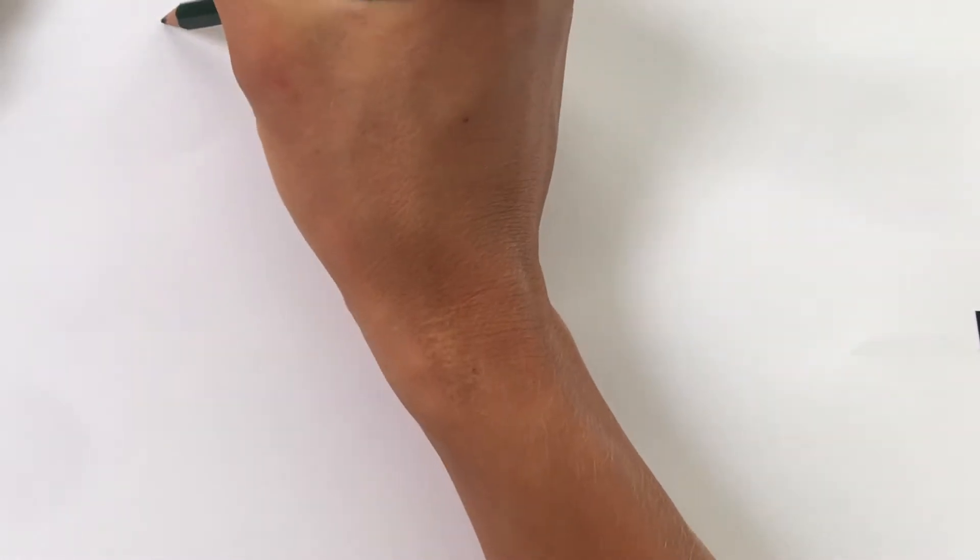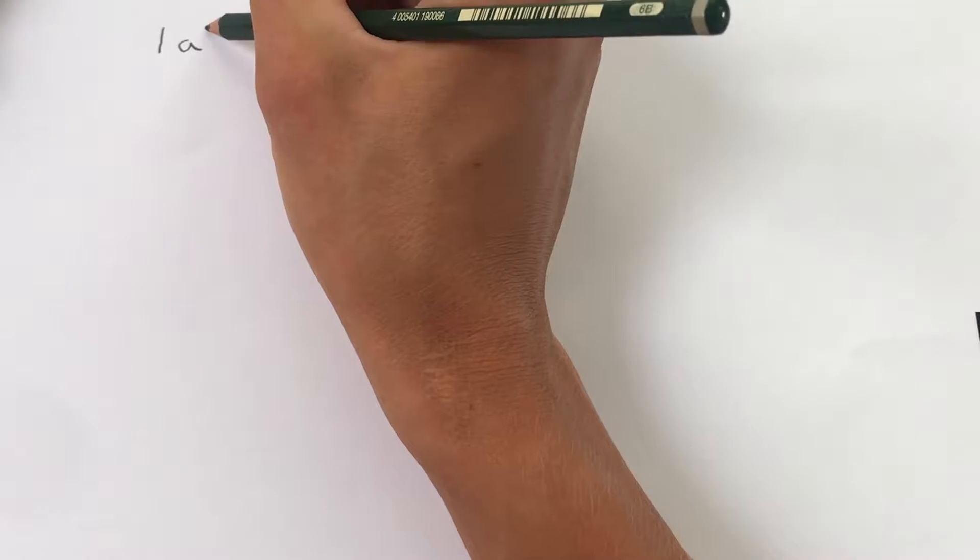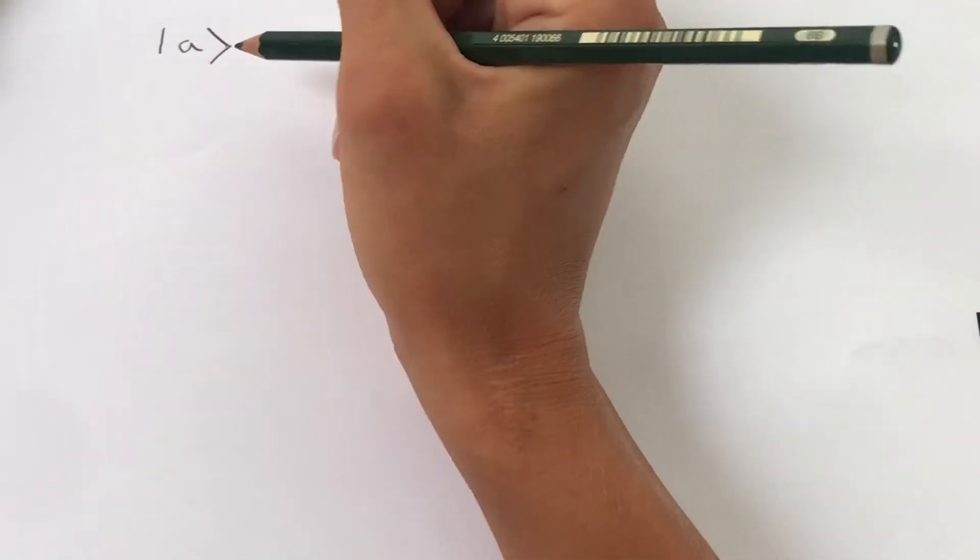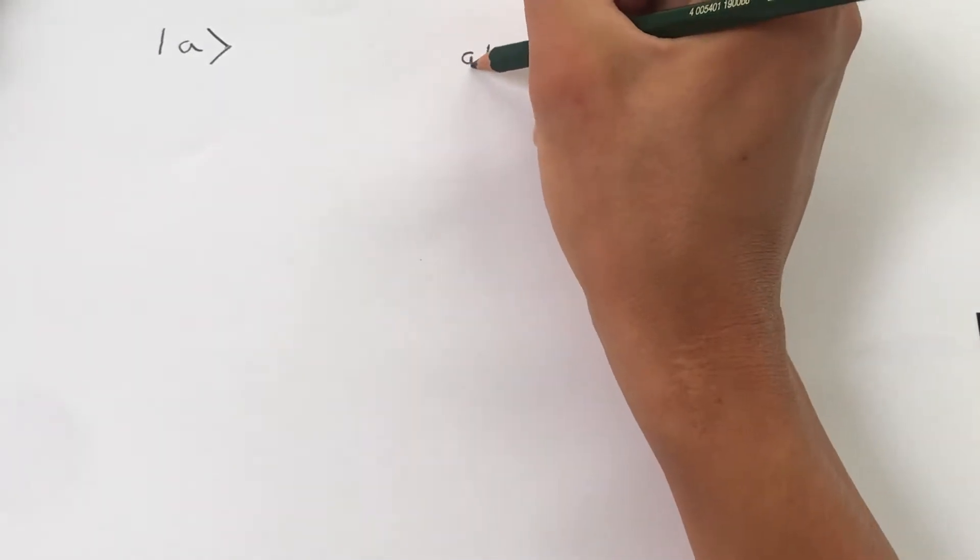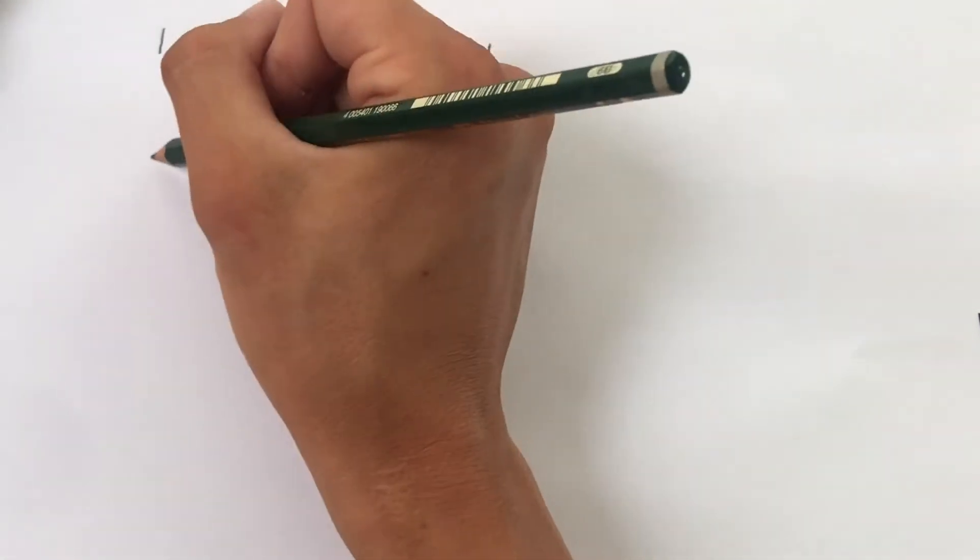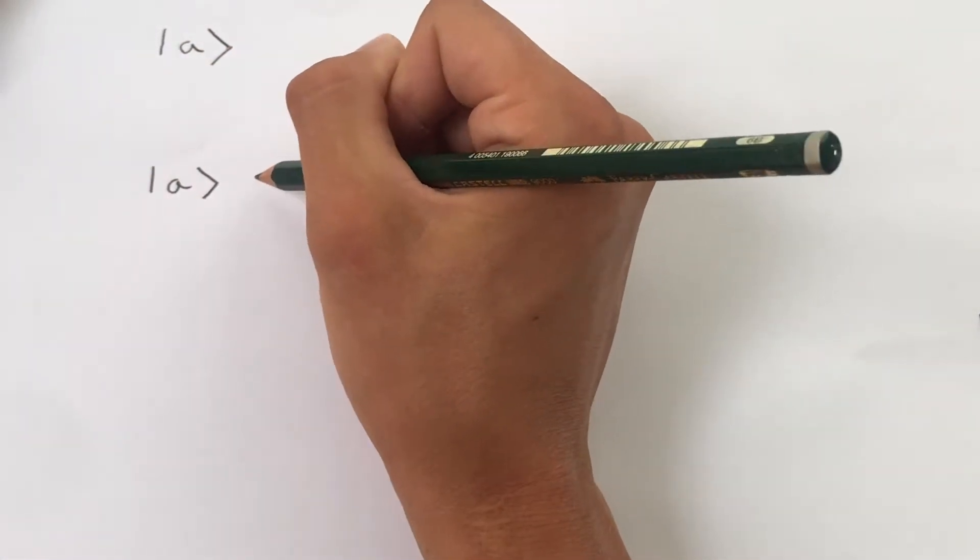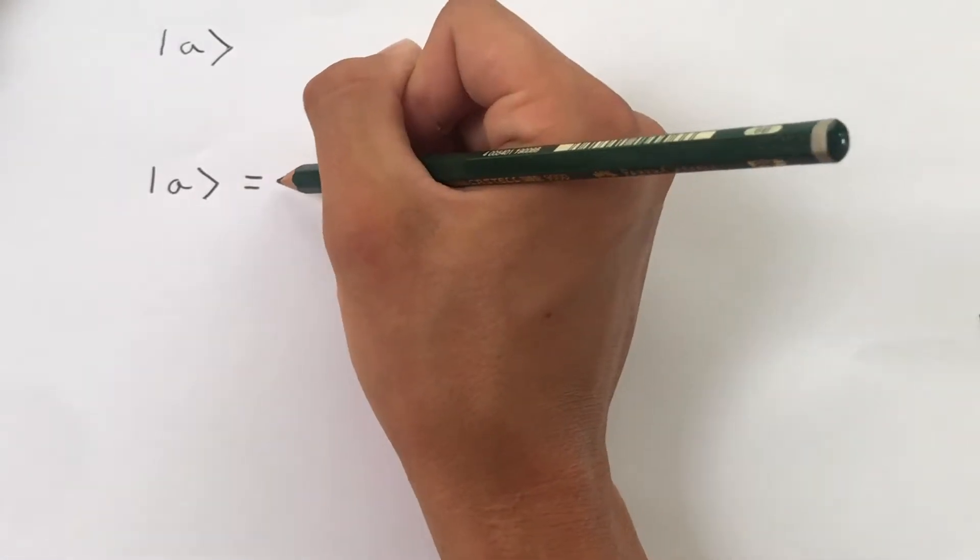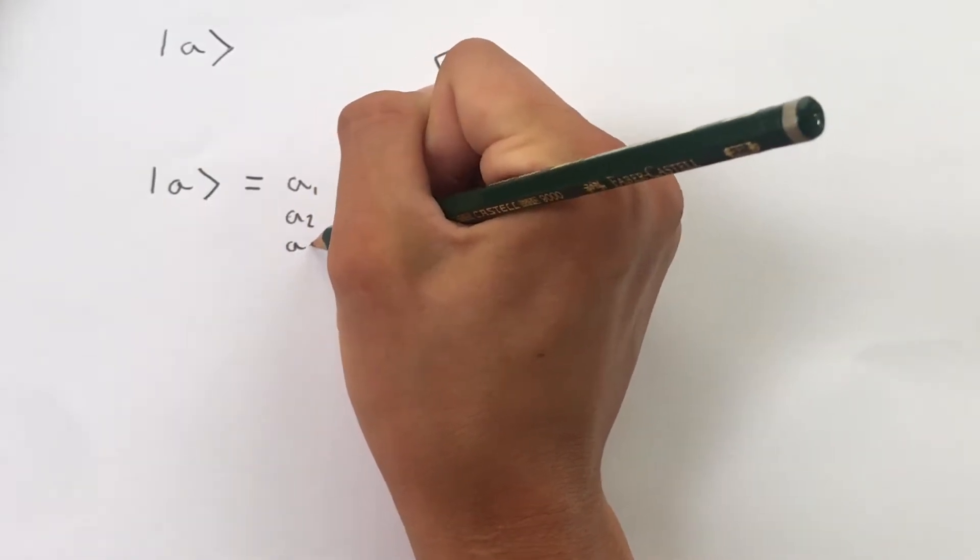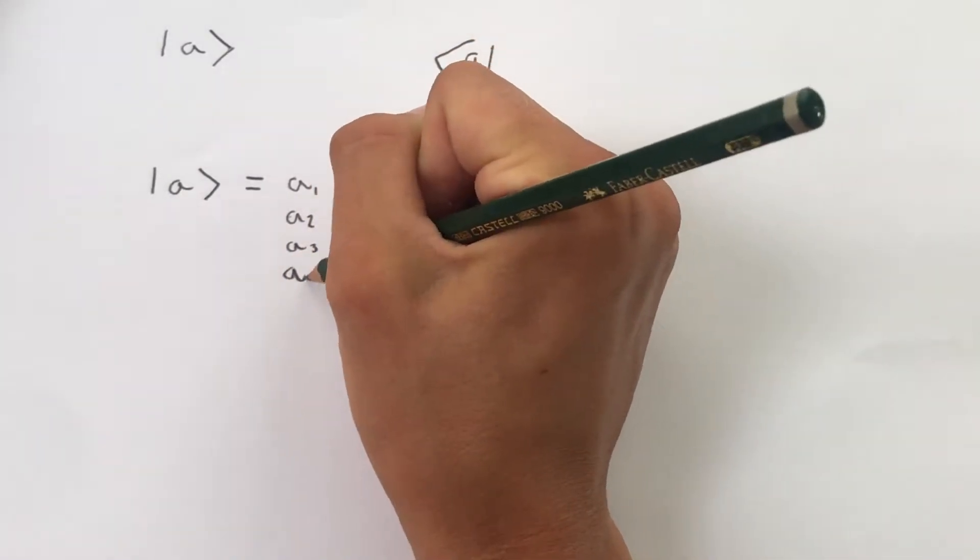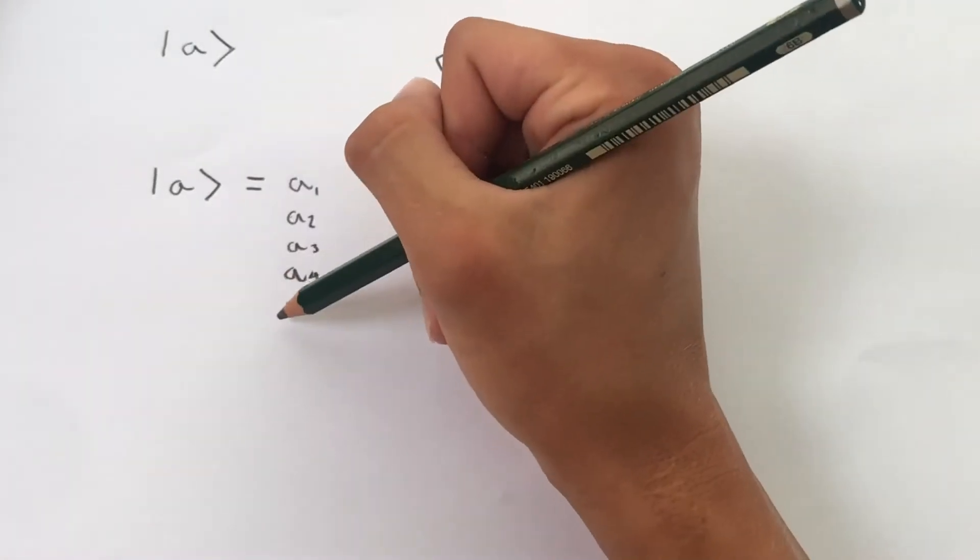So the ket vector looks like this, where you have a number in between a state and then a bigger than sign. The ket vector represents a column of numbers: a1, a2, a3, a4, all the way up to an, where n is the number of dimensions that you choose to work with.